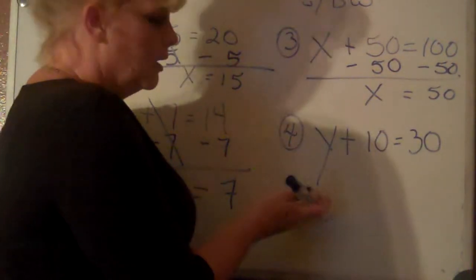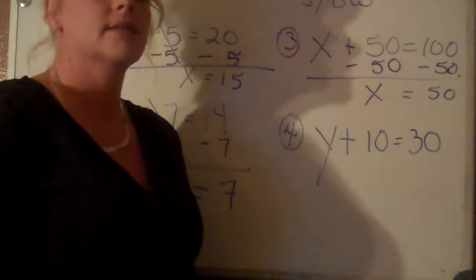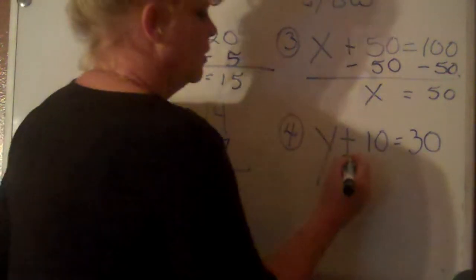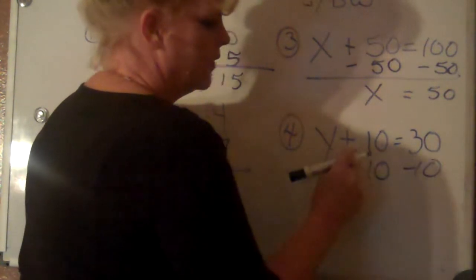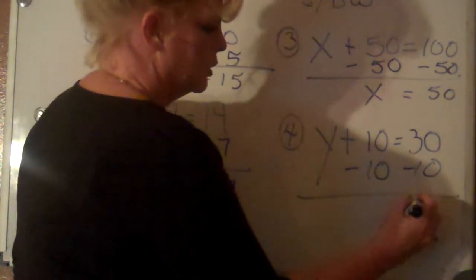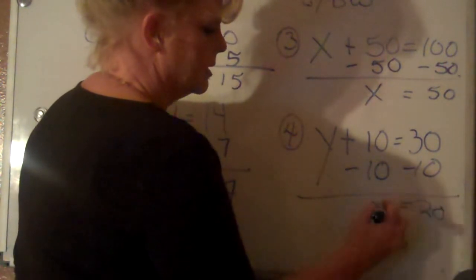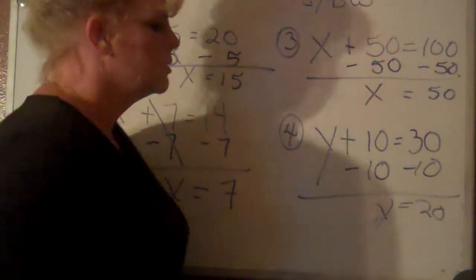Okay, now we see a y here. I put that there on purpose just to let you know—do not panic. It's the same exact thing. We're going to subtract 10 from both sides because that's the opposite of adding. And of course, you're going to have x equals—I mean, I'm sorry, it's messing me up too. Y equals 20.